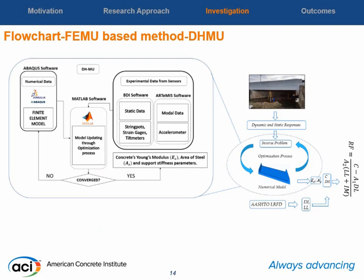This flowchart shows how the model updating process works. On one side, we have numerical data from Abaqus. On the other side, we have experimental data from sensors — either static data using, for example, string gauges and telemeters, or dynamic data obtained using accelerometers. The overall idea is that Abaqus numerical data flows into MATLAB, where we have defined an objective function as the difference between numerical and experimental data, and we apply an optimization method.